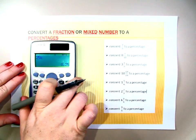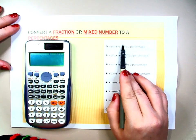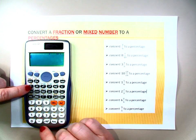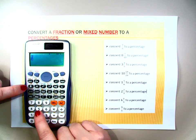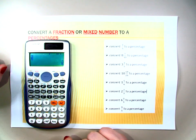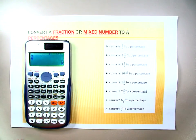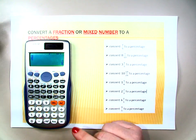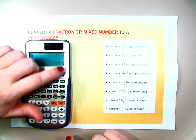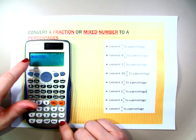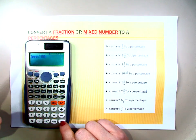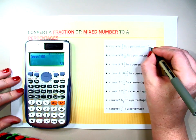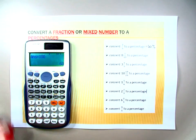Let's try converting three-fifths to a percentage. We start with the fraction button — enter 3, fraction, 5. It comes up with three-fifths, which is already in its simplest form. To make it into a percentage, we first hit the SD button to get the decimal 0.6, then multiply by 100. When you hit multiply, you'll see 'Ans' come up — that just means your previous answer. So three-fifths as a percentage is 60%.